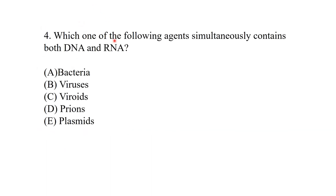Which of the following agents simultaneously contains both DNA and RNA? Only bacteria have both DNA and RNA. Viruses have either DNA or RNA — never both. Prions have no RNA or DNA; they are only infectious proteins. So bacteria is the best answer.